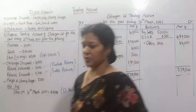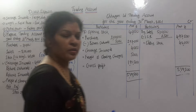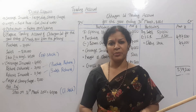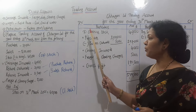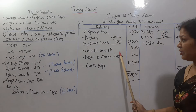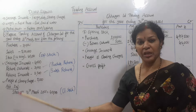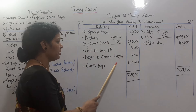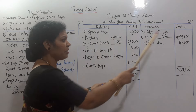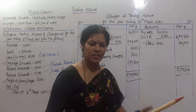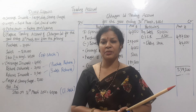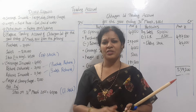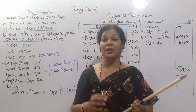This is the completed trading account. We have 4 items: opening stock, purchases, sales, and closing stock, plus direct expenses. The credit side exceeds the debit side, so we have a gross profit of ₹1,93,500. If the debit side were larger, it would be a gross loss. In the next class, we will cover profit and loss with indirect expenses. Stay connected, check out the playlist, practice well, and good luck.